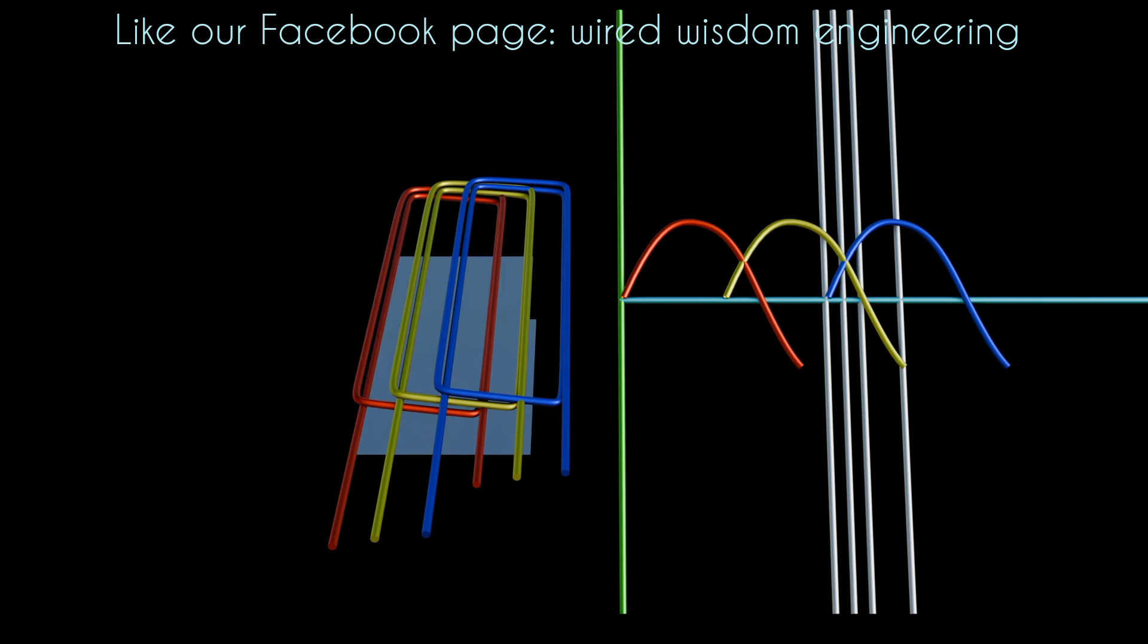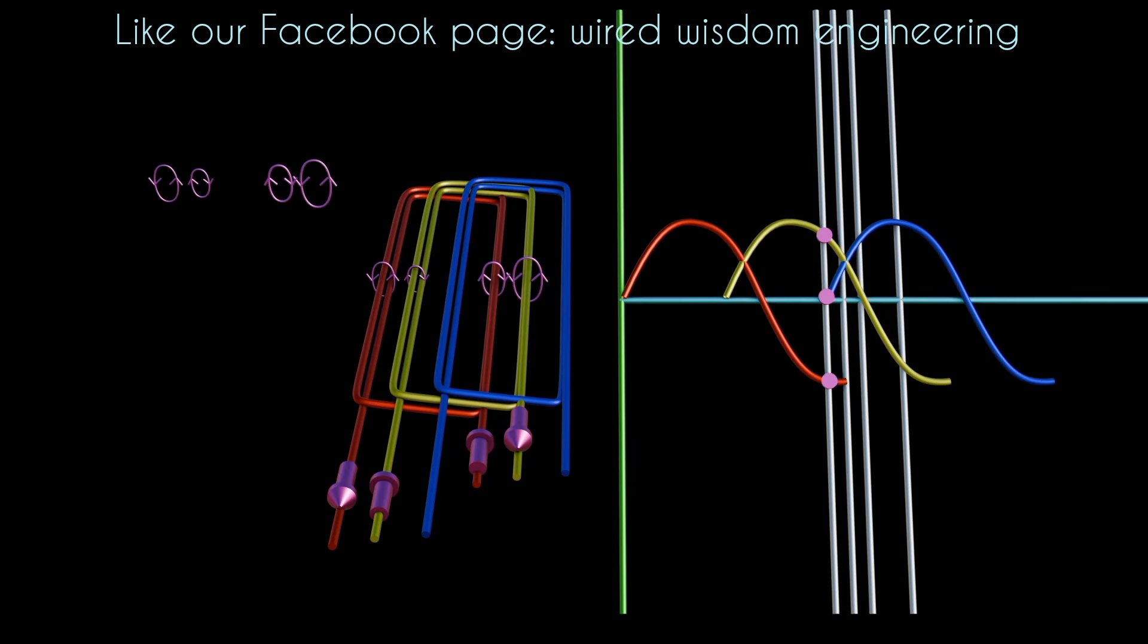The first scenario, the red phase is at the negative, the yellow phase is at the positive, and the blue phase is at zero. Therefore, the current flows through the red phase and yellow phase, but in the opposite direction. The red phase current is opposite to the yellow phase current. Let's freeze the magnetic field formed at this first scenario.